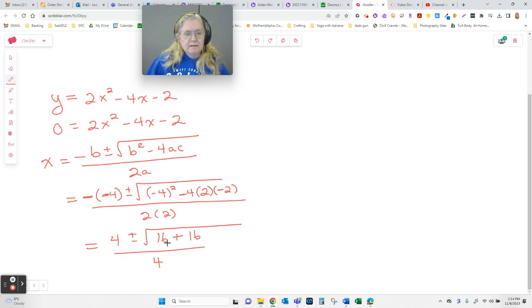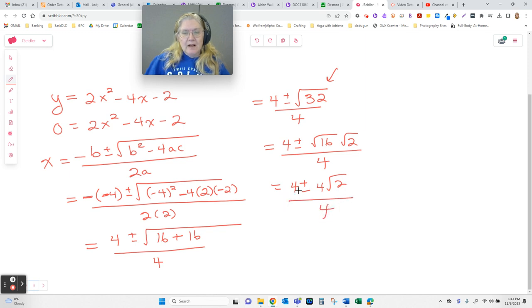Don't go cancelling here yet. I cannot reduce a 4 that is not under a root sign with a 16 that is under. They have to both be under root signs if I was going to do that. So, 4 plus or minus square root of 32 over 4. And if you think back to simplifying radicals from last course, you know that that's really the square root of 16 times root 2 over 4. And the square root of 16 is 4.